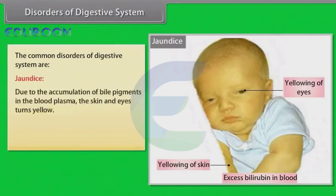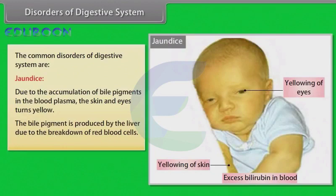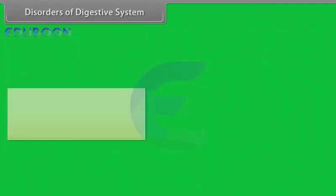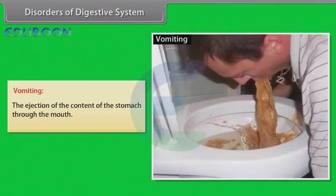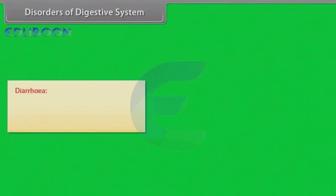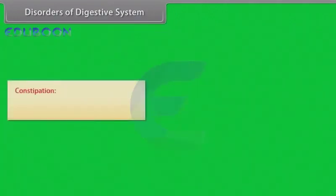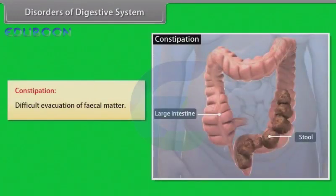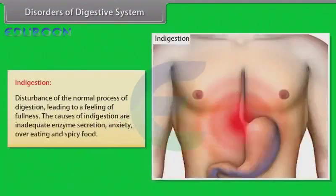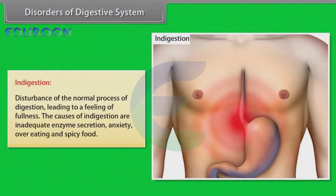The common disorders of the digestive system are: jaundice, caused by accumulation of bile pigments in the blood plasma, turning the skin and eyes yellow — bile pigment is produced by the liver from the breakdown of red blood cells; vomiting, the ejection of stomach contents through the mouth; diarrhea, the abnormal frequency and liquidity of fecal discharges; constipation, difficult evacuation of fecal matter; and indigestion, a disturbance of normal digestion leading to a feeling of fullness, caused by inadequate enzyme secretion, anxiety, overeating, or spicy food.